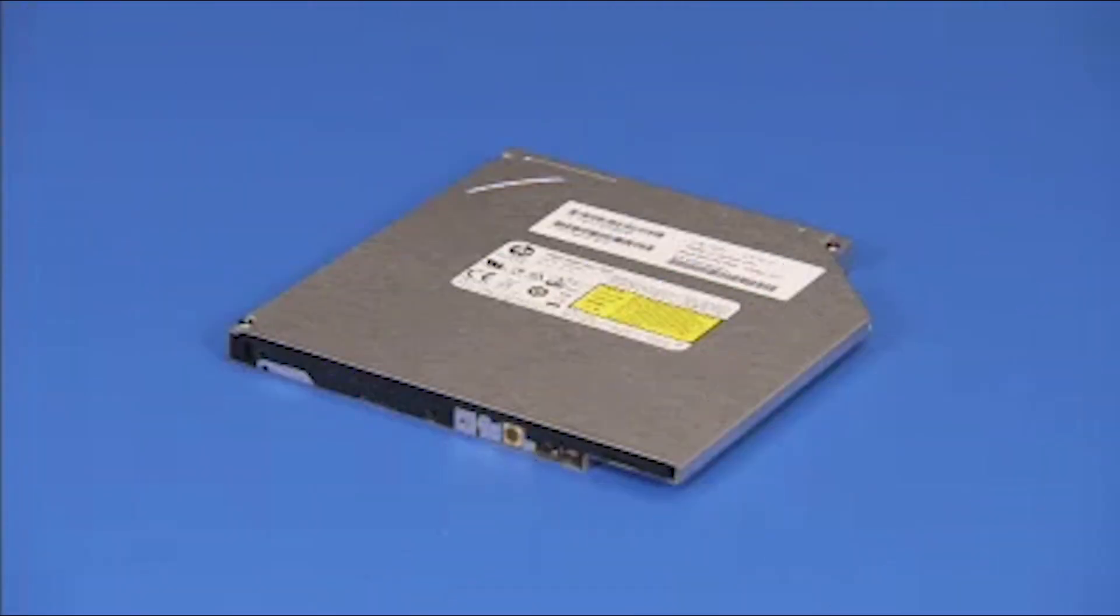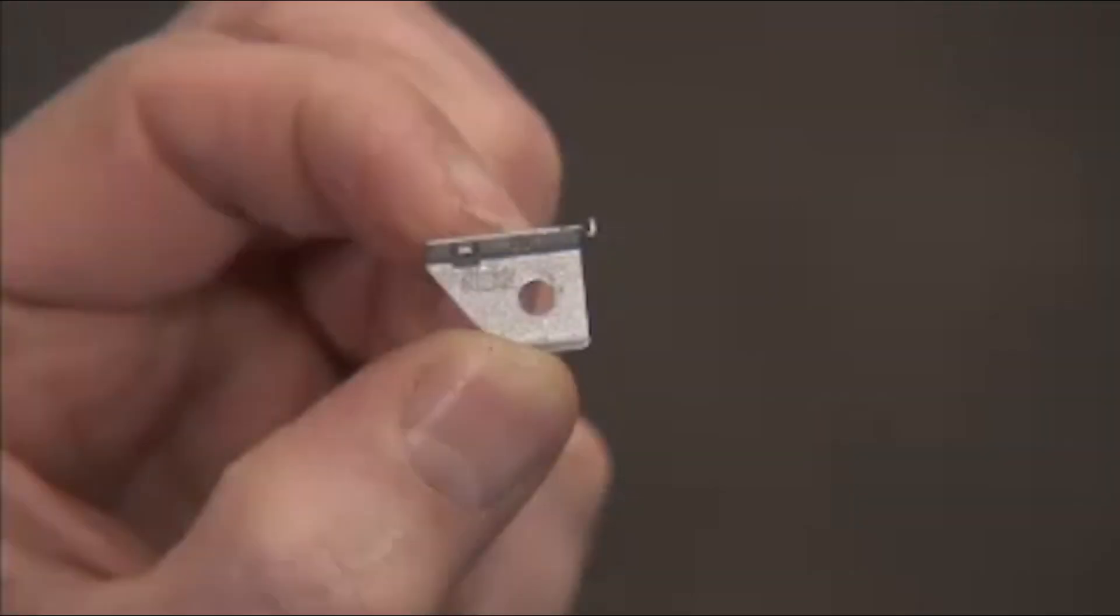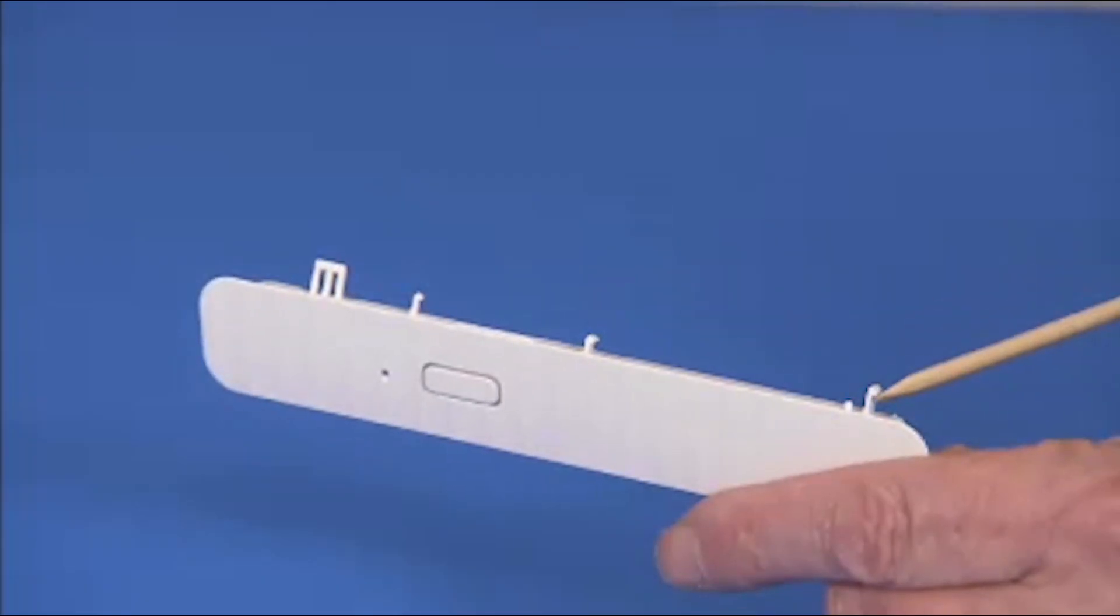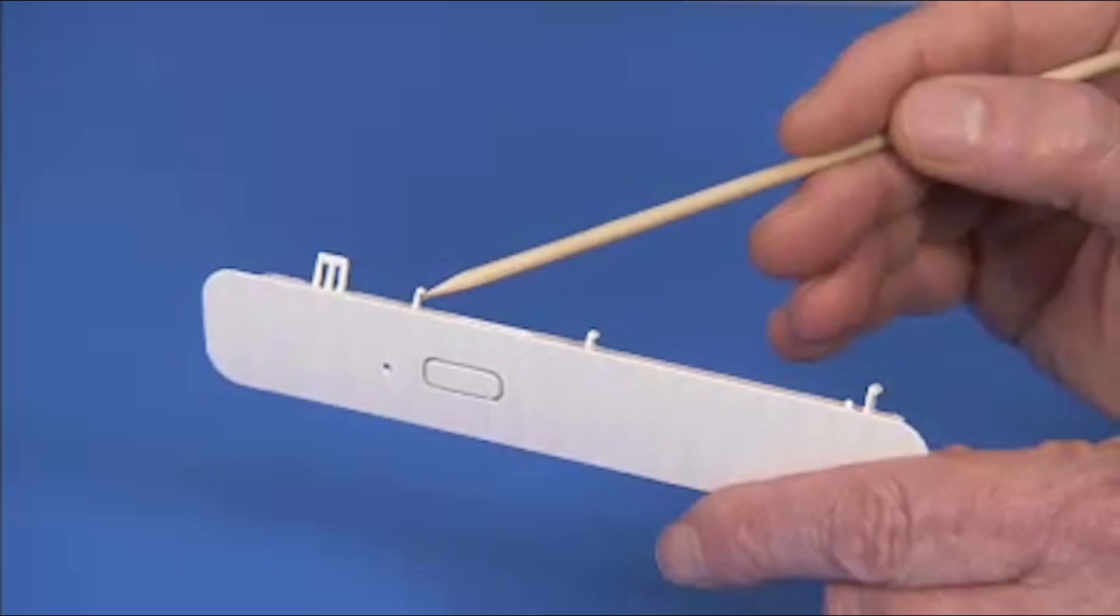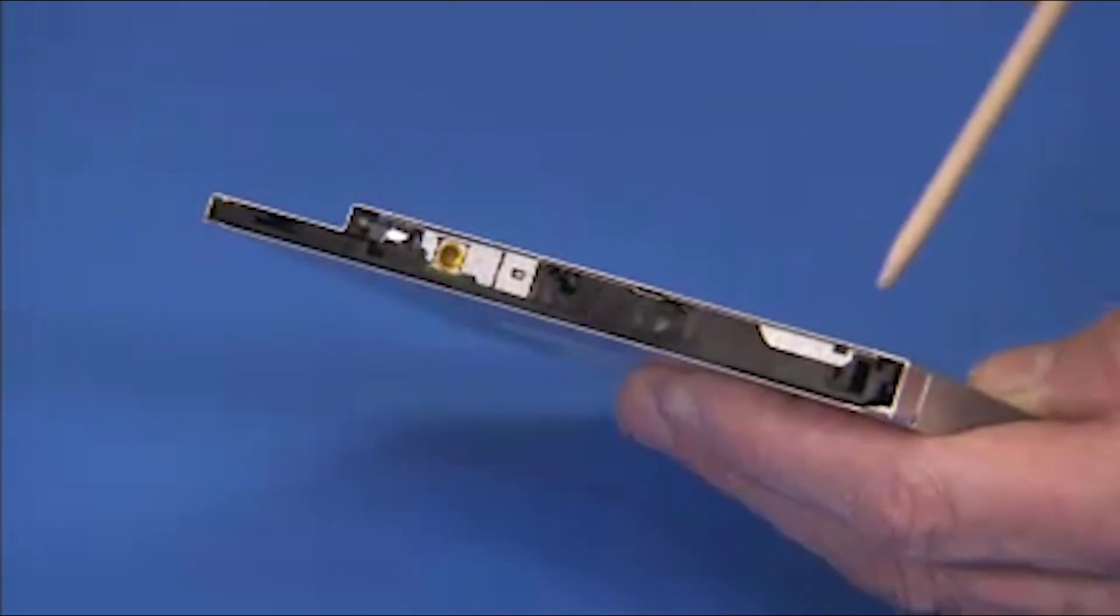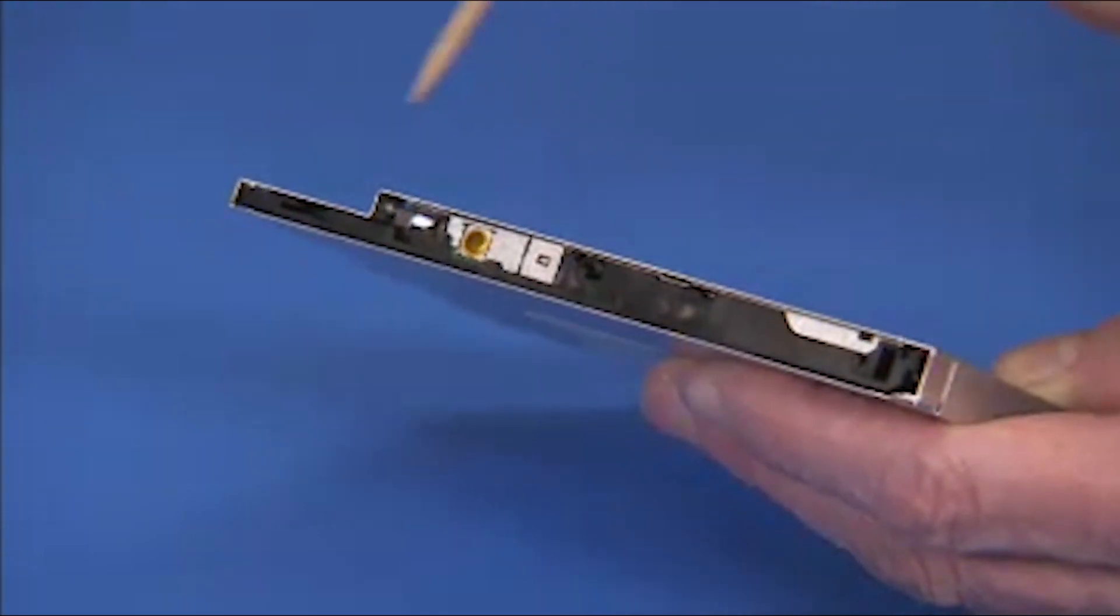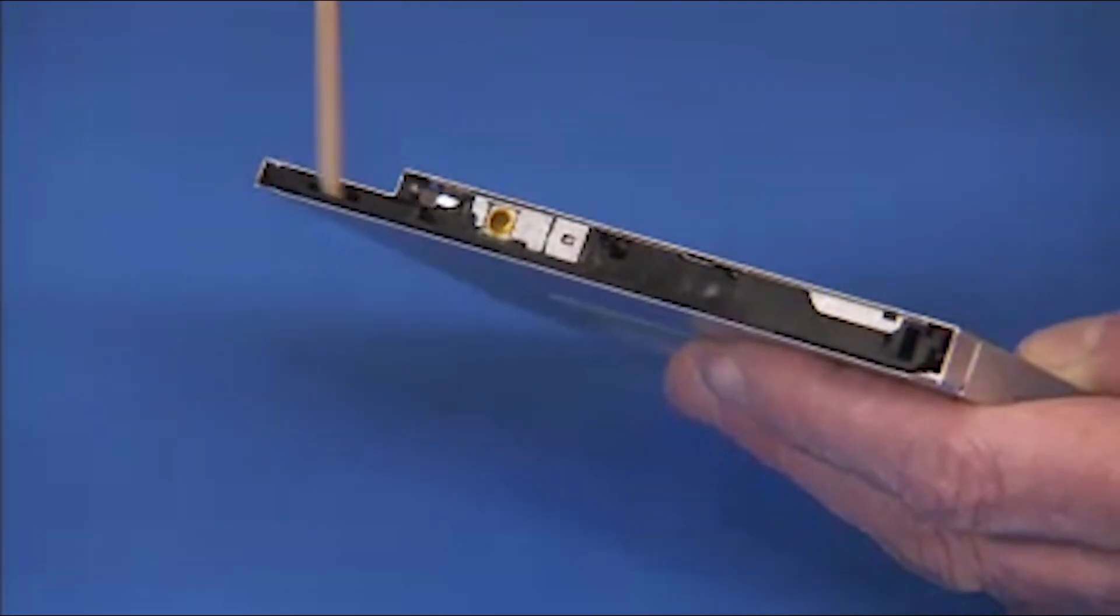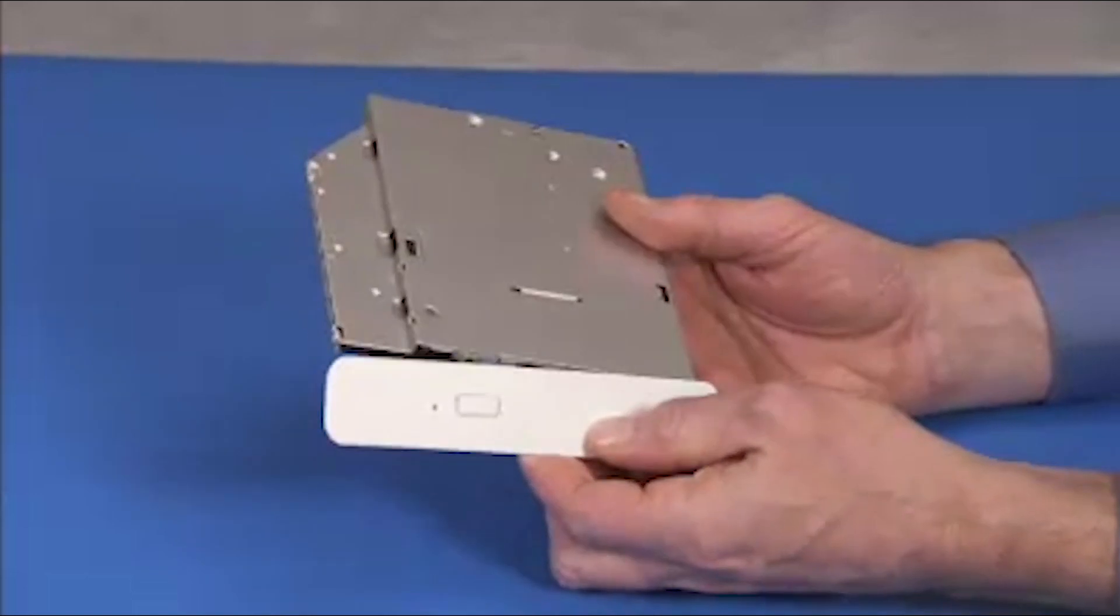If installing a new optical drive, attach the bezel and the bracket from the old drive to the new drive. The bezel has several tabs that fit into slots on the front of the optical drive. Press the tabs into the slots until the bezel is secure.